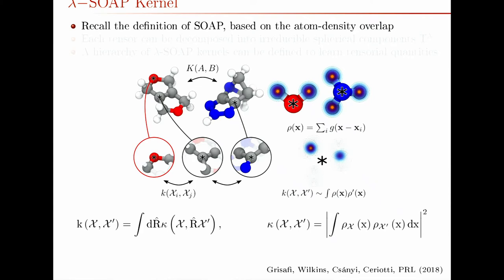The kernel between local environments is given by the product of their local densities integrated over all space. But you don't just want to compare one orientation of this environment to one orientation of that environment, because that won't give you as much information. So what you want to do is average over every possible mutual orientation of the two environments — or in practice, average over all the orientations of one environment, keeping the other one fixed.